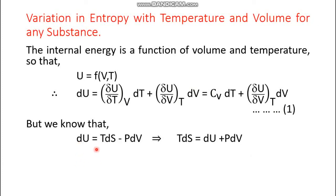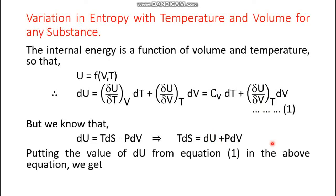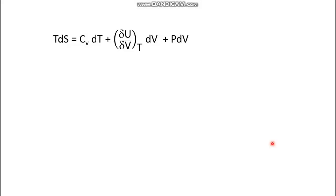From the fundamental equation of thermodynamics, dU = TdS − PdV, which rearranges to TdS = dU + PdV. We substitute the expression for dU from equation one, replacing dU with Cv dT + (∂U/∂V)_T dV. So TdS equals Cv dT plus (∂U/∂V)_T dV plus PdV, giving us three terms on the right-hand side.